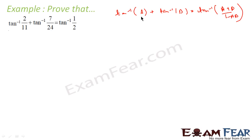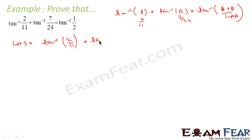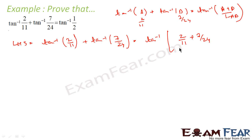Here a is equal to 2 by 11 and b is equal to 7 by 24. So LHS is tan inverse 2 by 11 plus tan inverse 7 by 24. We apply the formula: tan inverse a plus tan inverse b becomes tan inverse of (2 by 11 plus 7 by 24) by (1 minus 2 by 11 into 7 by 24).